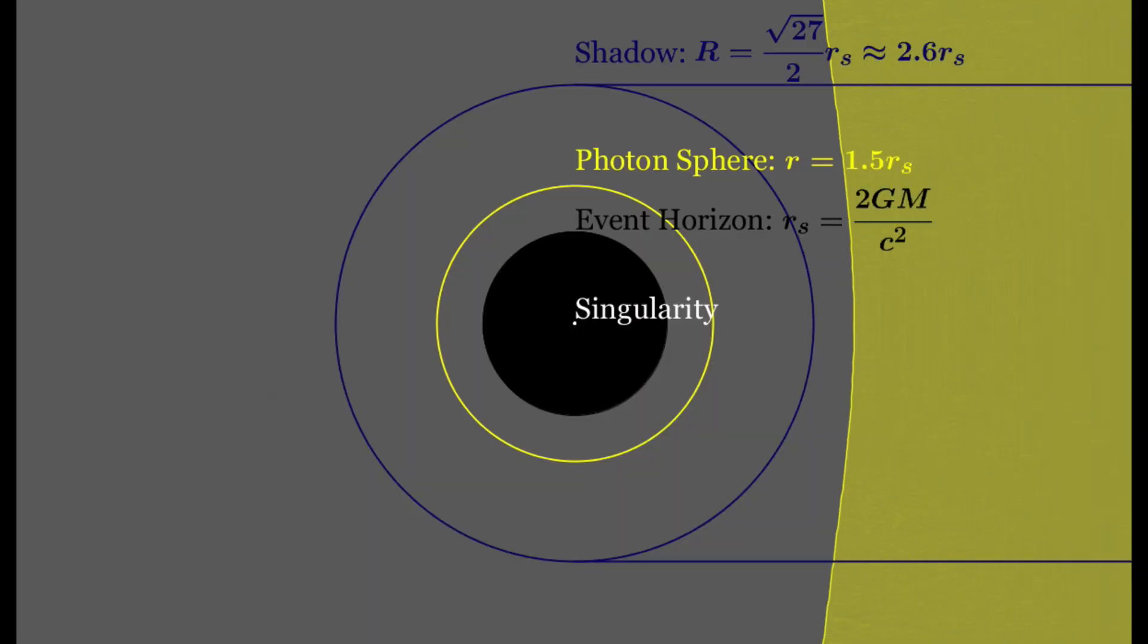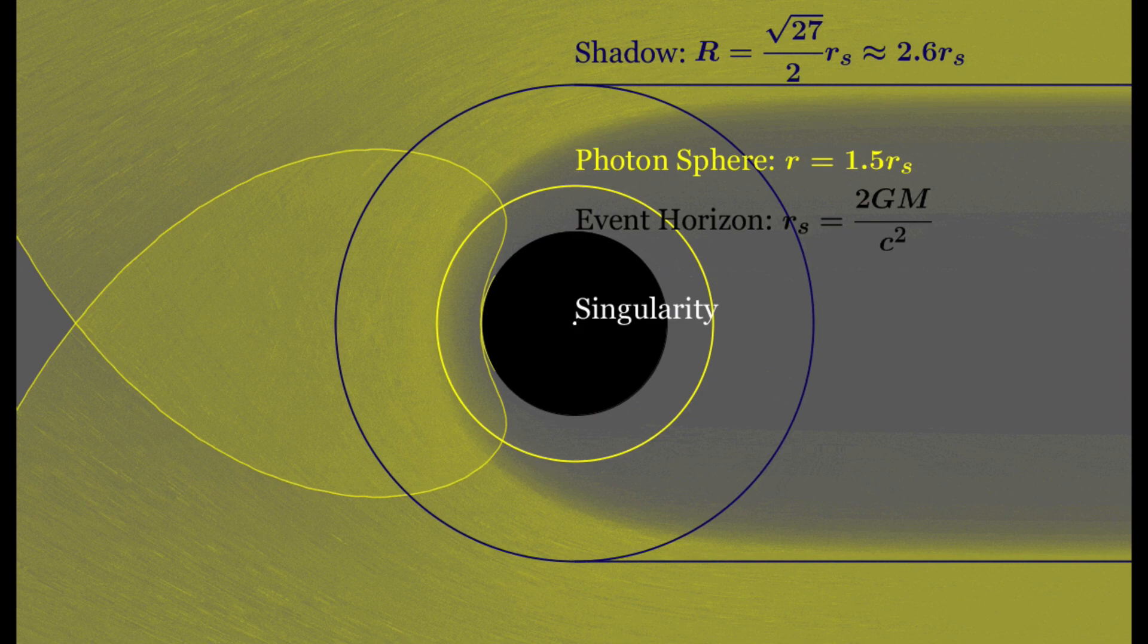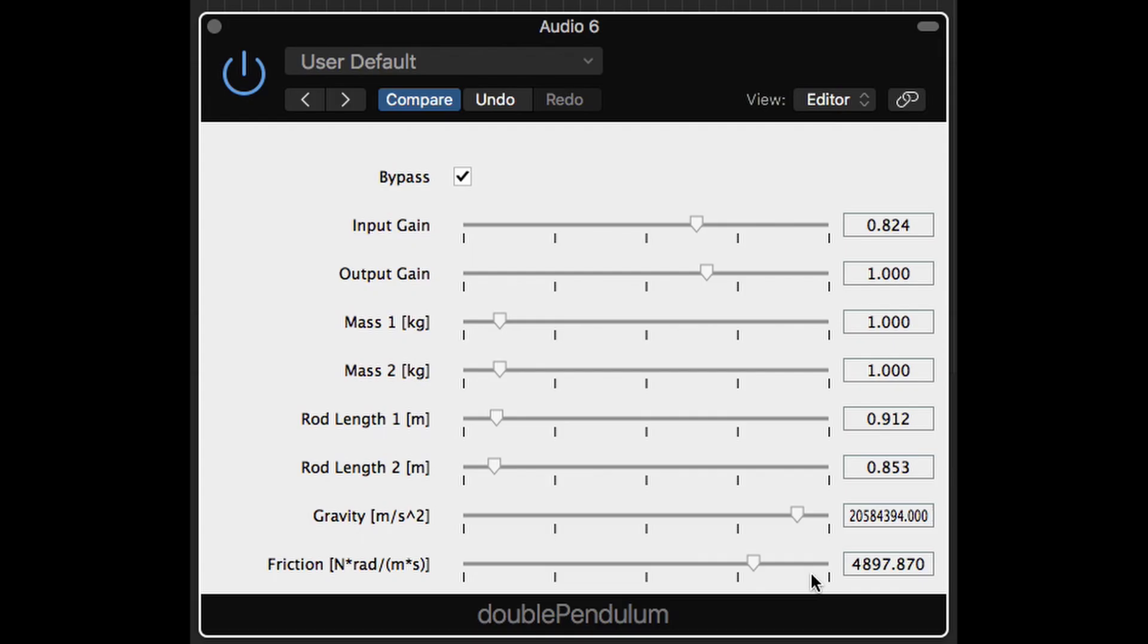I mean, that scenario is so ridiculous, sound is probably a meaningless concept, but it's a cool image. Anyway, I can reduce the friction and increase the gravity a bit, and that will give me something that likes to ring.